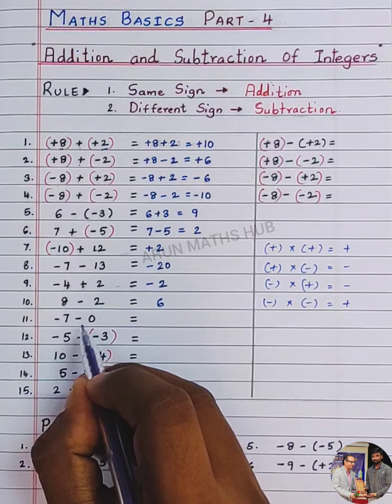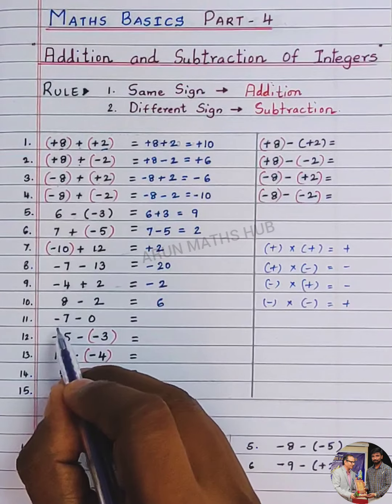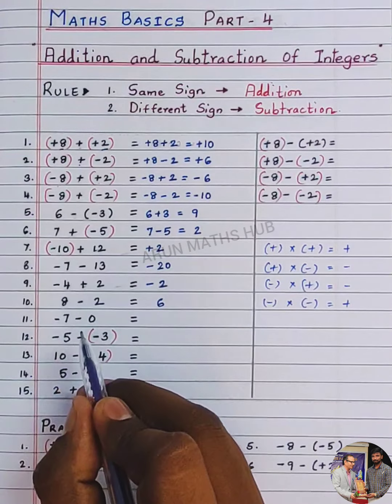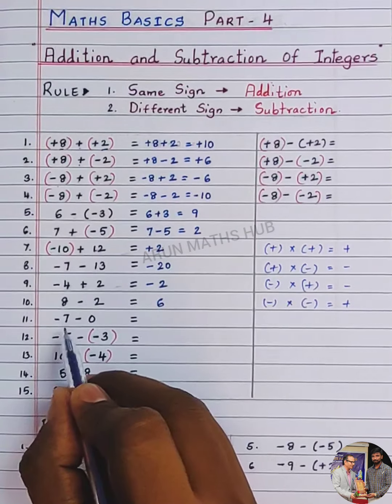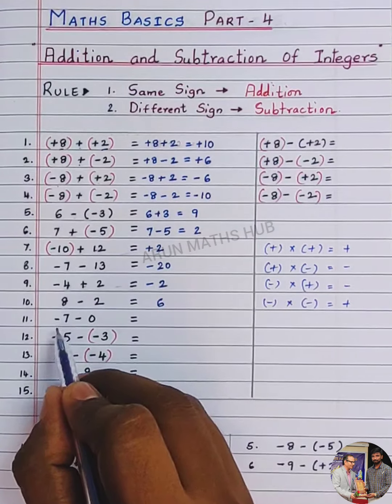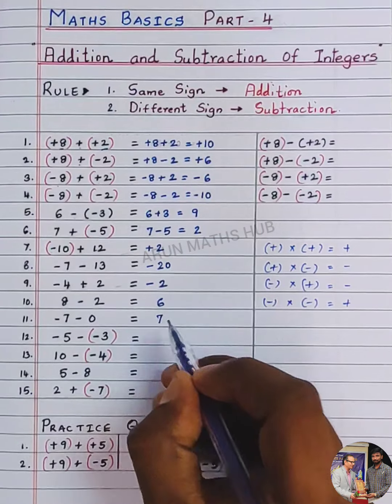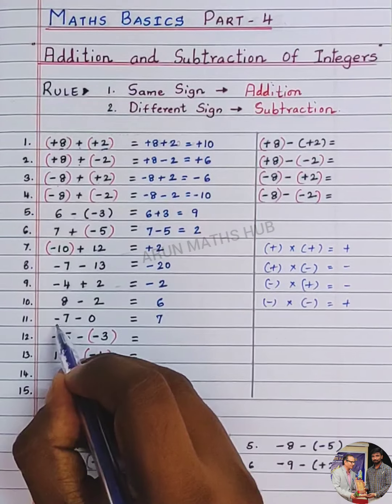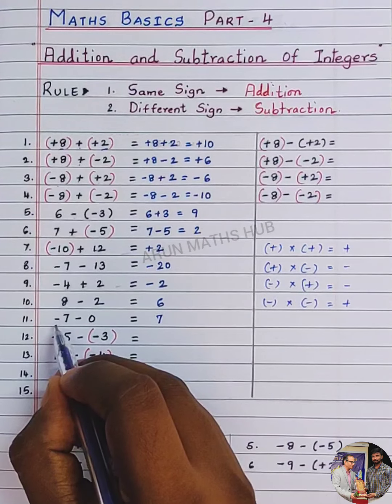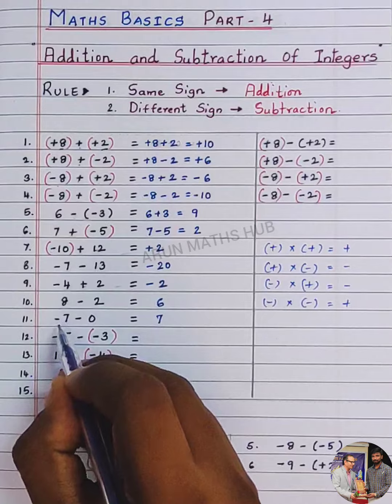Minus 7, minus 0 — signs are same, so you have to do addition. 7 plus 0 is 7, and the bigger number's sign is minus, so the answer is minus 7.